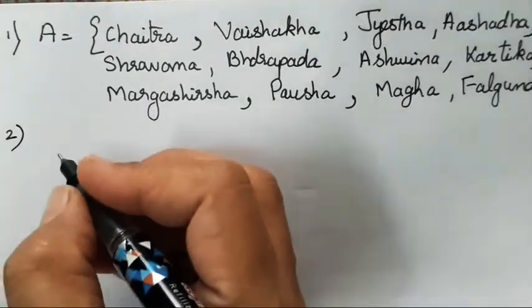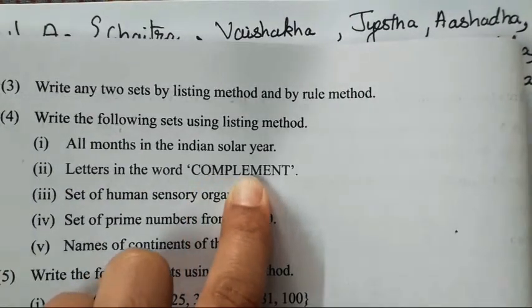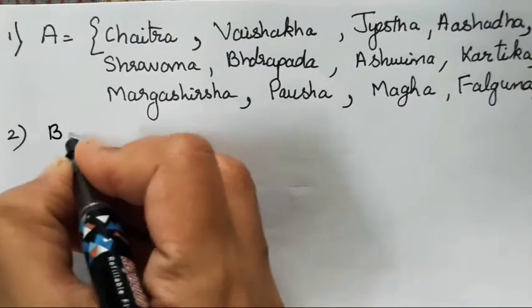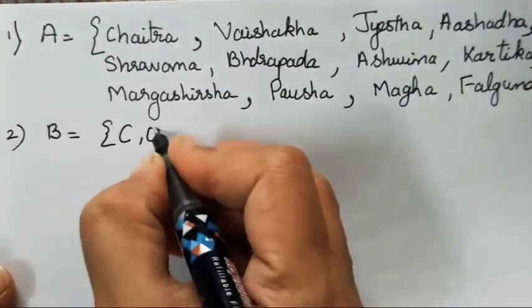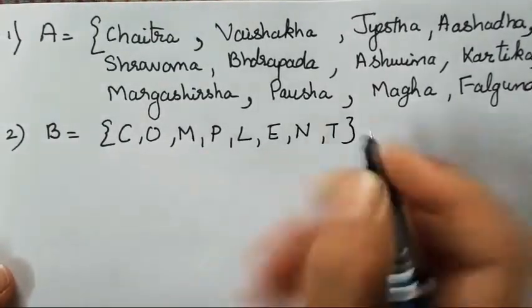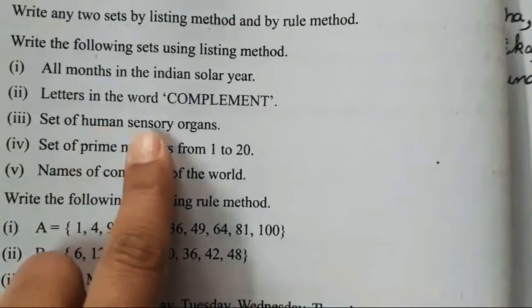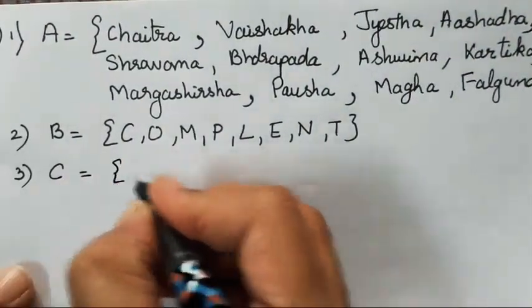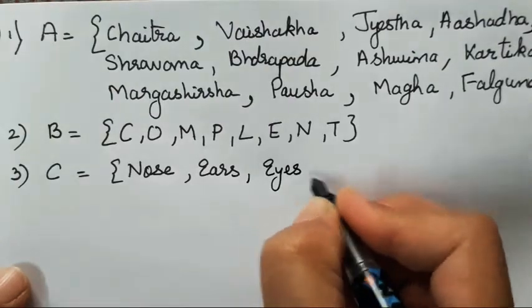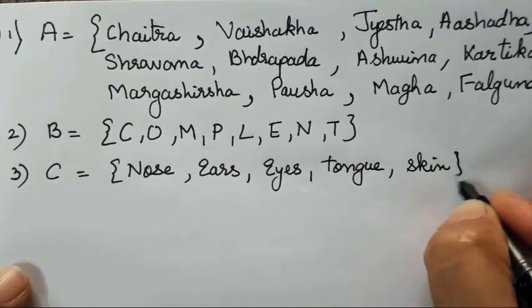The second one is letters in the word 'complement.' You don't repeat the same letter — E appears twice so write it once, M appears twice so write it once. Take B and write: C, O, M, P, L, E, N, T. The third one is set of human sensory organs. Take any variable and write: nose, ears, eyes, tongue, and skin — these are the five sensory organs.